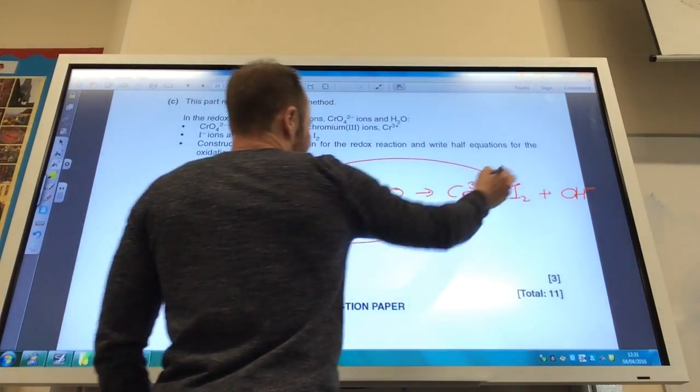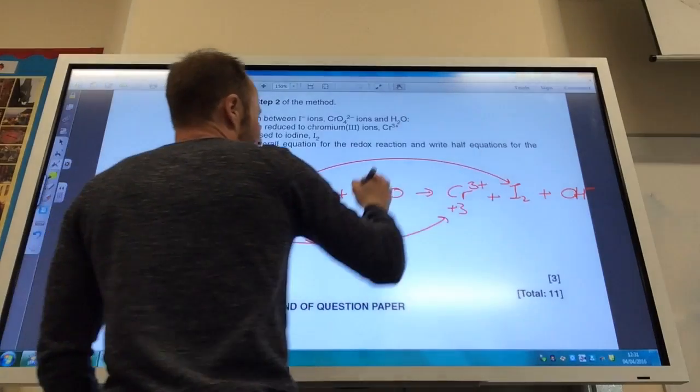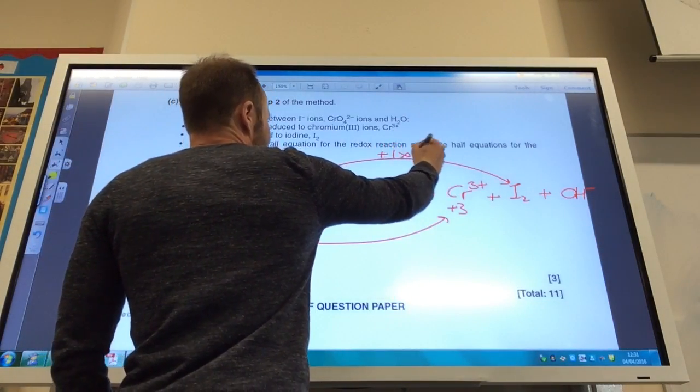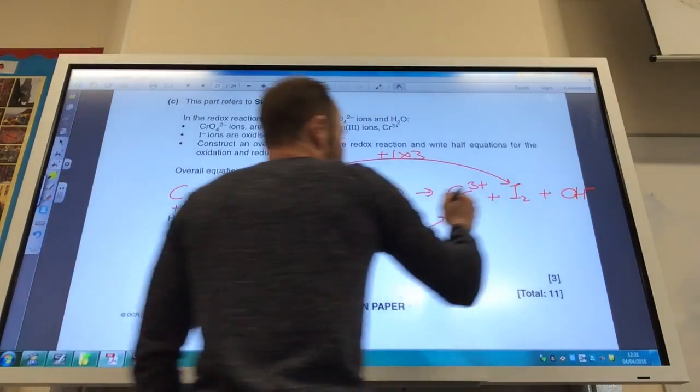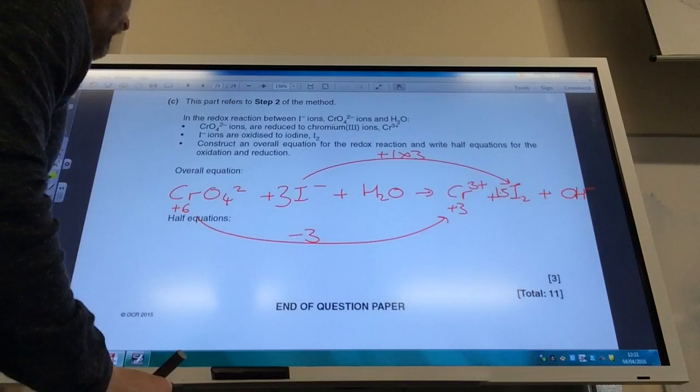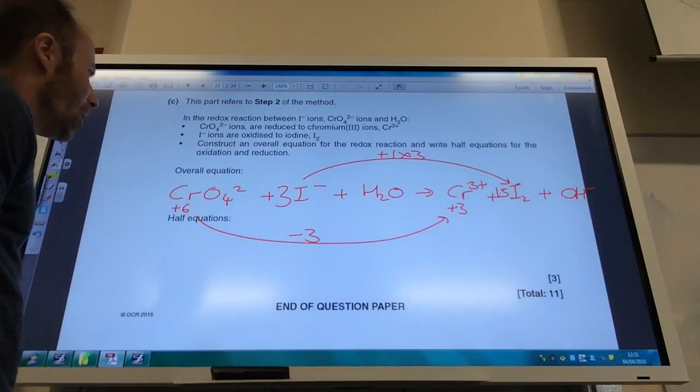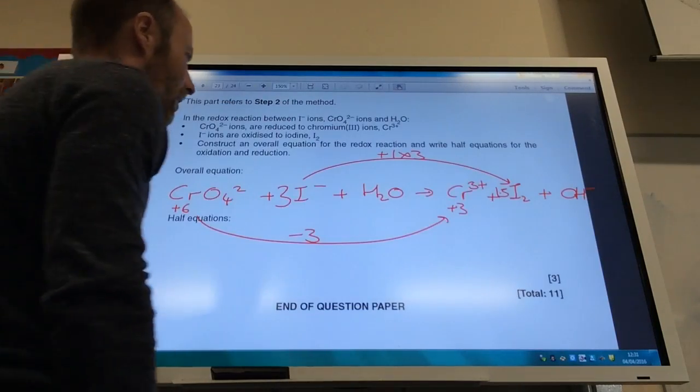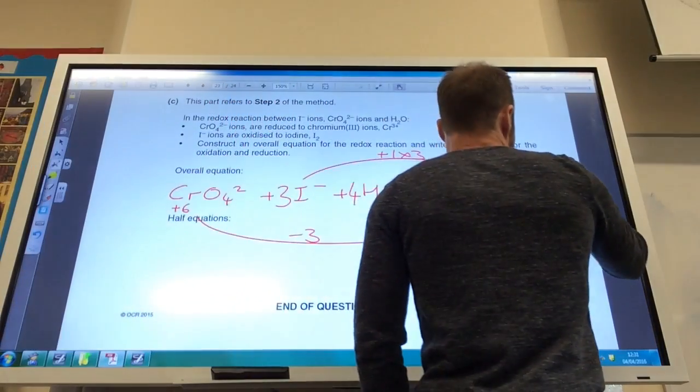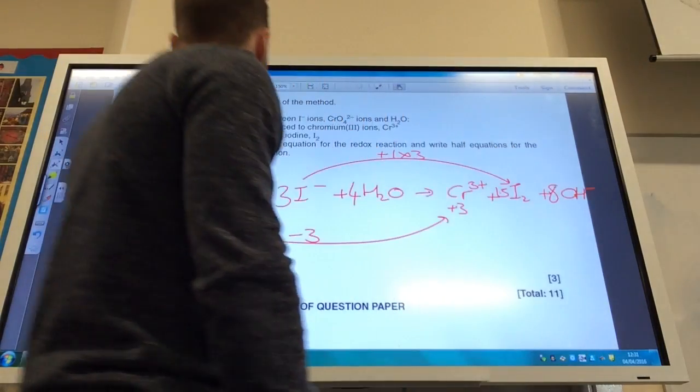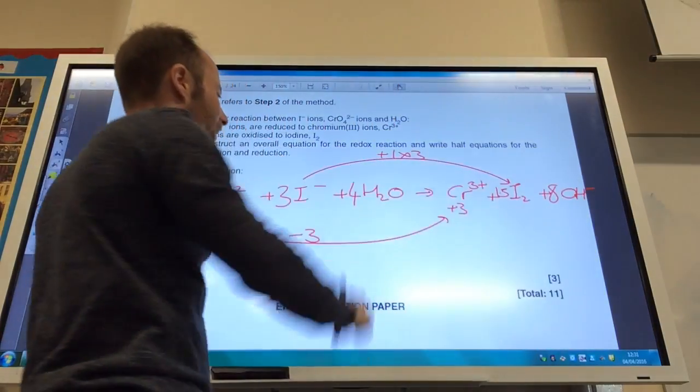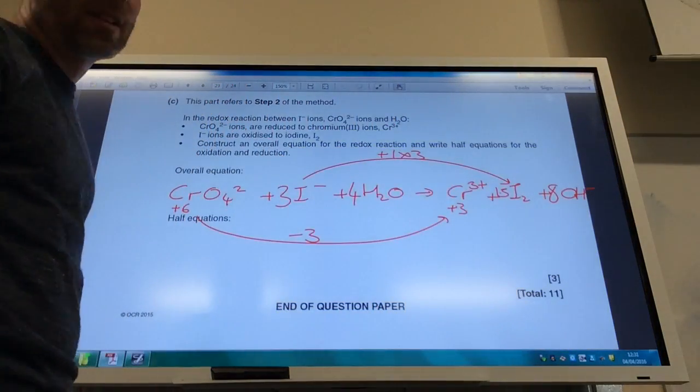Iodide going to iodine has gone from -1 to 0 so it's gone up by 1 so I need to times that by 3 so that means I've got 3 there and I'm going to make 1.5 iodines there. I'm now going to get my oxygens and hydrogens to balance so if I pop a 4 there and an 8 there that means that my oxygens will give me the 8 that I need there and I've still got my 8 hydrogens there.